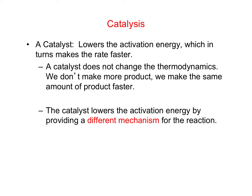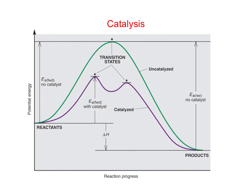Catalysts don't change the thermodynamics. They don't change the relative energy of the reactants and products, and they don't create more product — we just make the same amount of product faster. The way that catalysts lower the activation energy is by providing a different mechanism for the reaction. This diagram sums up a lot of the key features of catalysts. It's a reaction energy diagram showing the energy of the reactants and products for a generic reaction. The green curve represents the uncatalyzed reaction, and the purple curve represents the catalyzed reaction.